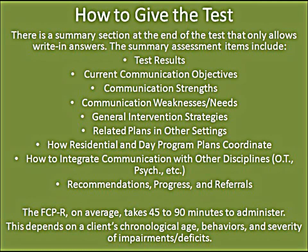There is a summary section at the end of the test that only allows write-in answers. The summary assessment items include test results, current communication objectives, communication strengths, and so on. The Functional Communication Profile takes, on average, 45 to 90 minutes to administer, depending on a client's chronological age, behaviors, and severity of impairments.